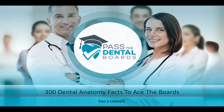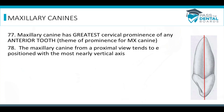We're moving right along with these 300 facts, and this one's going to be all about the canines. We're going to start on the maxillary canine, and the maxillary canine has the greatest cervical prominence of any anterior tooth, and we're going to see that there's a theme of prominence for the maxillary canine.